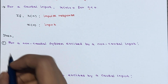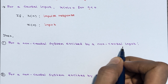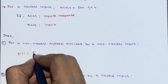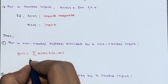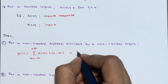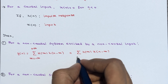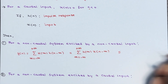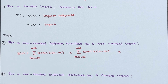For a non-causal system excited by a non-causal input, y(n) equals the summation of x(m) times h(n minus m), where m ranges from minus infinity to plus infinity. By the commutative property, this can also be written as summation of h(m) times x(n minus m), again with m from minus infinity to plus infinity.